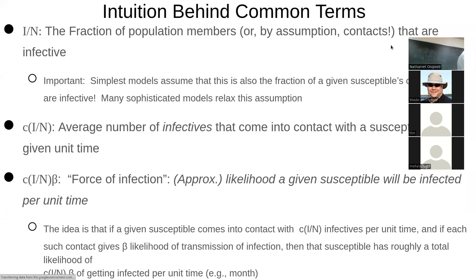In assignment three, the past lecture, and the videos you had to watch, there was a focus on communicable disease models as examples of non-linear models. We need two to tango — we need susceptibles and infectives, and their impact comes from being together. I'm listing here common terms you encountered, like I over N. What's the intuition of I over N?